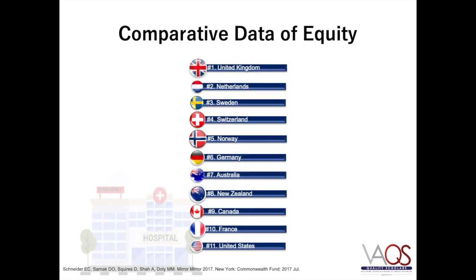There are data that compare international health care systems on several metrics, including equity. In countries with health care systems that ranked higher on measures of equity, relatively small differences between lower and higher-income adults existed. However, lower-ranked countries evidenced larger disparities between lower and higher-income adults. These differences were especially large on measures related to financial barriers to care, such as skipping needed doctor's visits or dental care, forgoing treatments or tests, and not filling prescriptions because of the cost.